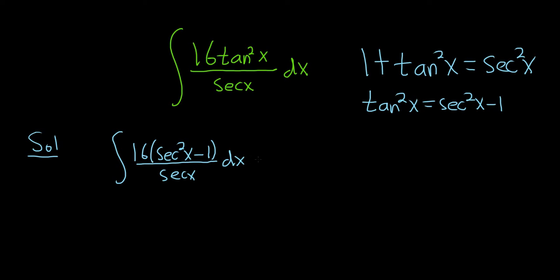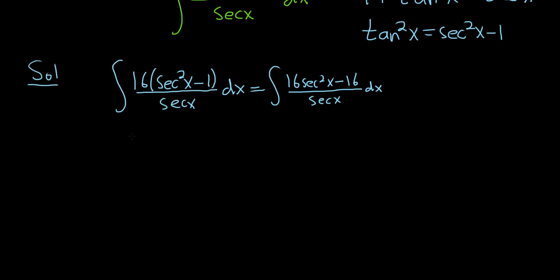Let's go ahead and distribute the 16. This is 16 secant squared x minus 16 over secant x dx. Now we'll break it up into two integrals.